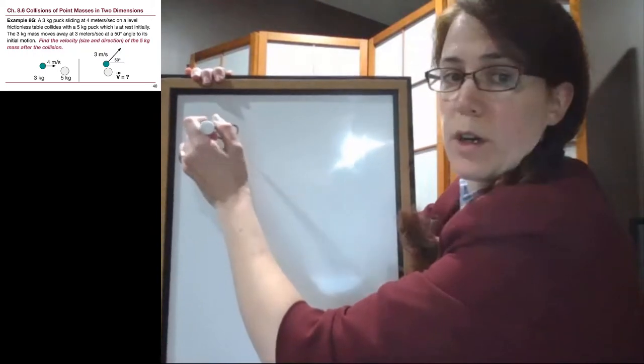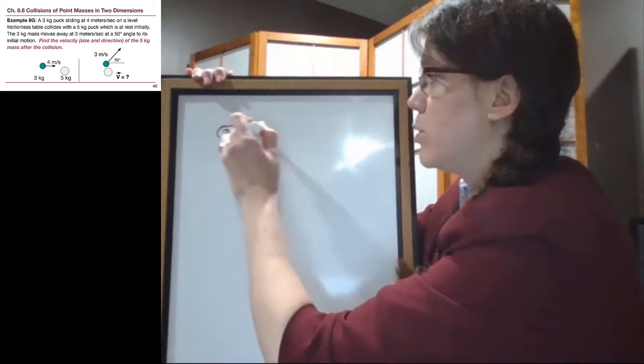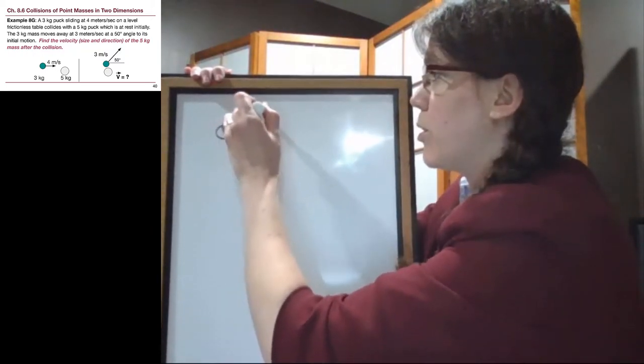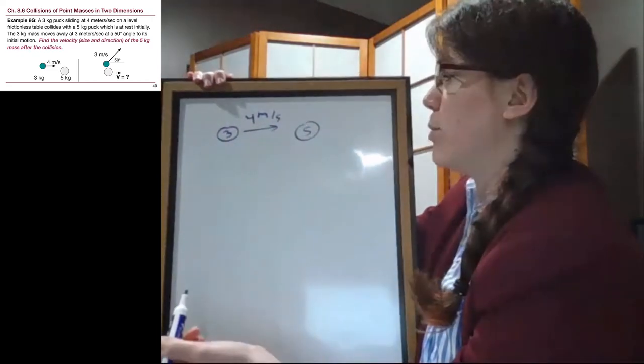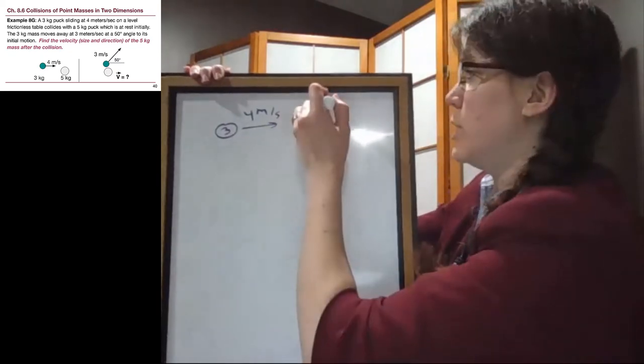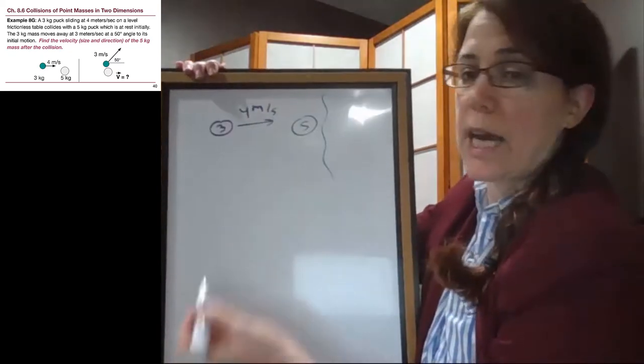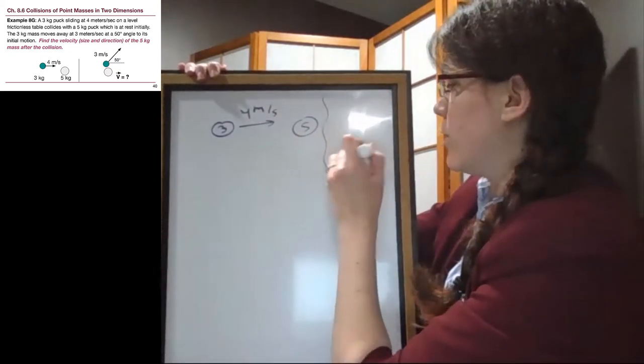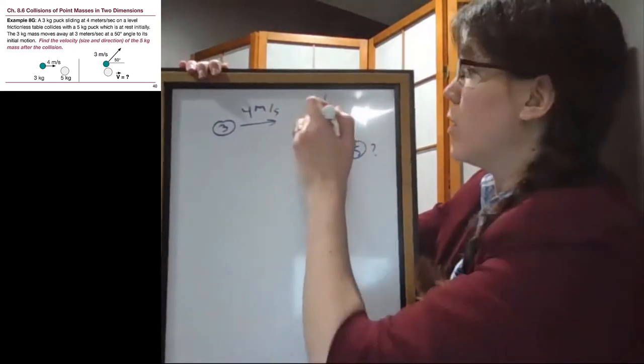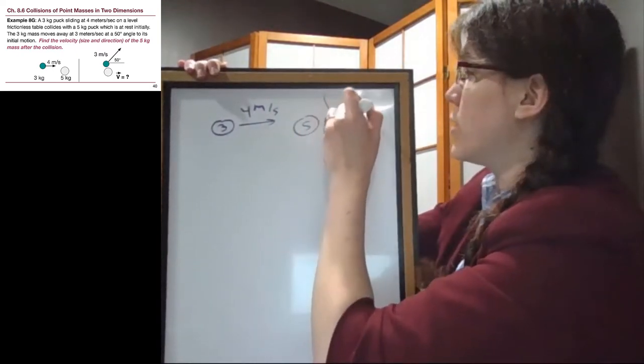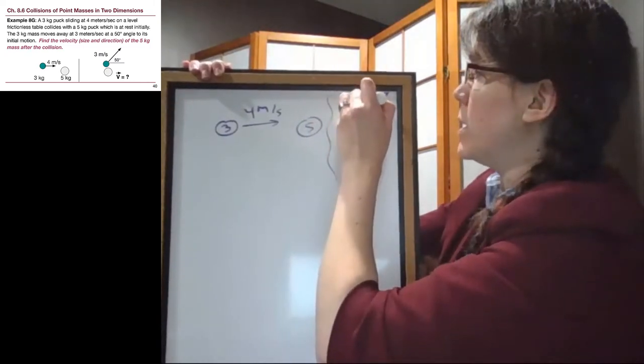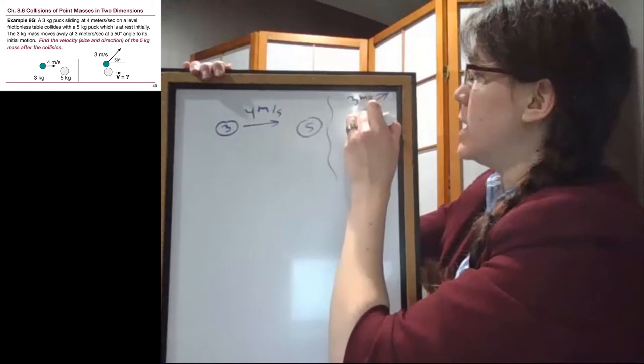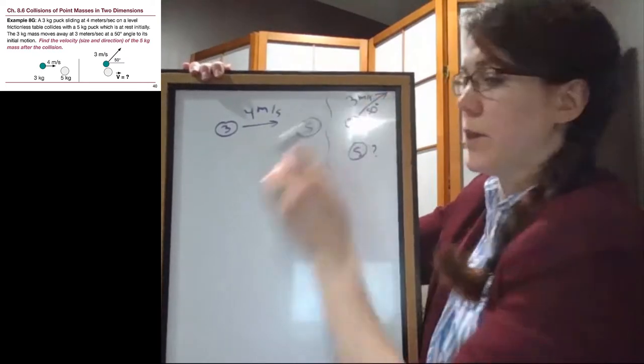We have the three kilogram block moving initially at four meters per second, and it's about to hit the five kilogram block. That's the before situation. Afterwards, we don't know what the five kilogram block is doing. We do know that the three kilogram block is going up at an angle, three meters per second, and there's a 50 degree angle here.